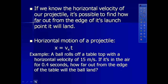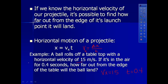If we know the horizontal velocity of our projectile, it's possible to figure out how far from the edge of its launch it's going to land. Remember the horizontal speed doesn't change - there's no acceleration. So the only equation we can use for that part of the problem is: Vx equals change in distance over time. For example: a ball rolls off a tabletop with a velocity of 15 meters per second. If it's in the air for 0.4 seconds, how far from the edge of the table will the ball land? That gives us a change in x of 6 meters.